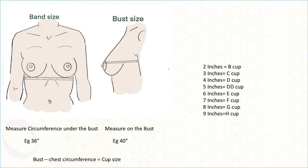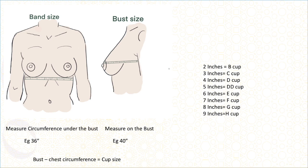How do you measure cup size? There is a band size and a bust size. Band size is the circumference measured underneath the breast — bras come with band sizes 32, 33, 34, 36. Bust size is the circumference measured with the tape over the breast, listed as A cup, B cup, C cup, and so on. Cup size equals bust size minus chest circumference. If the difference is 2 inches it's B cup, 3 inches C cup, 4 inches D cup — every additional inch adds a cup size.